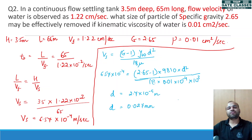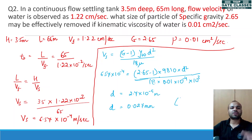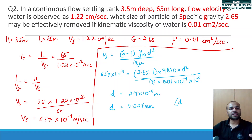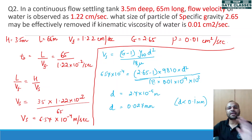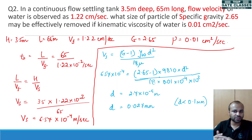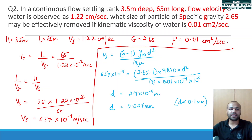We check whether our solution is correct: Stokes law is only valid for diameters less than 0.1 mm. Our diameter of 0.027 mm is less than 0.1 mm, hence we can validly use Stokes law for this problem to find the size of particle effectively removed.